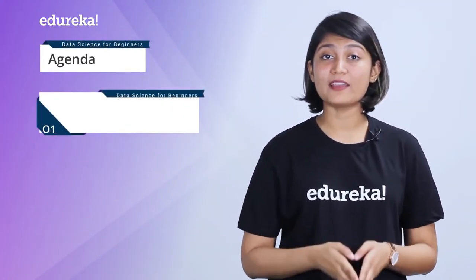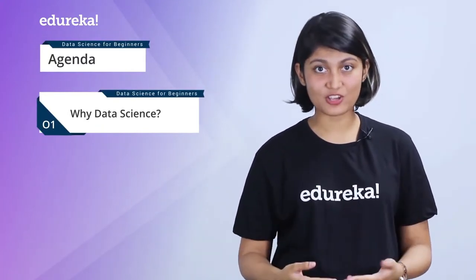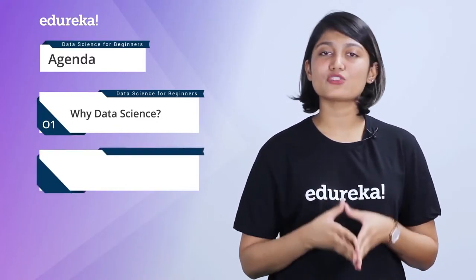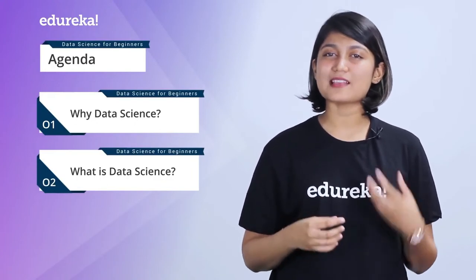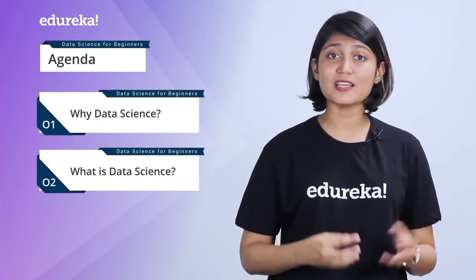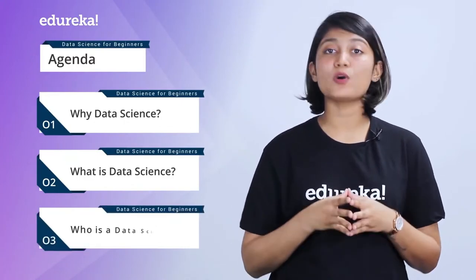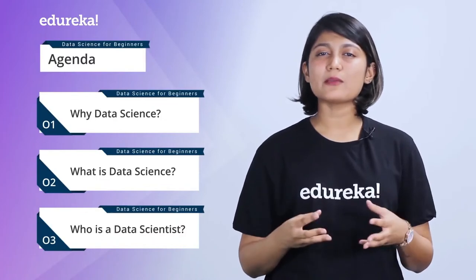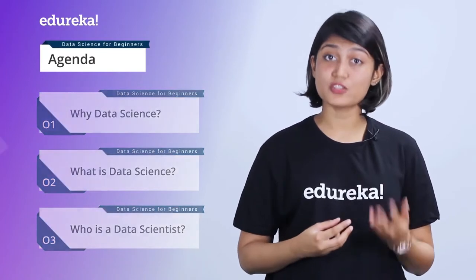So first of all, we're going to start with why data science — how data science came into the picture and ultimately how it influences your business decisions. Then we're going to talk about what is data science, discussing how exactly this data-driven science works and how it is different from its contemporaries like data analytics and business intelligence. Then we're going to talk about who is a data scientist — the job description and skills you require to apply for this role.